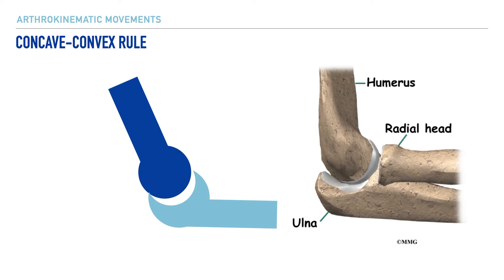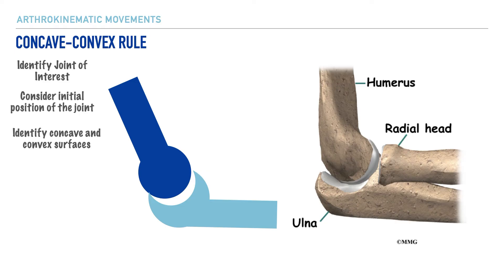For the concave-convex rule, let's go through the same prompts. First, we pick a joint of interest — for this example, the elbow, as shown on the right. Next, let's consider the initial position of the joint as shown. Now we identify which structure is concave and which is convex. The olecranon fossa is concave, and the trochlea of the humerus is convex.